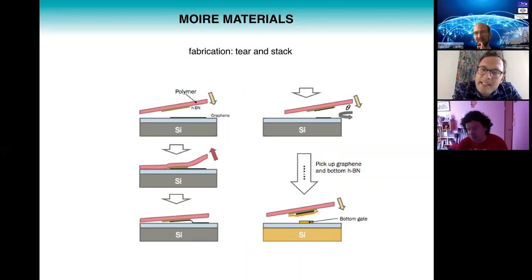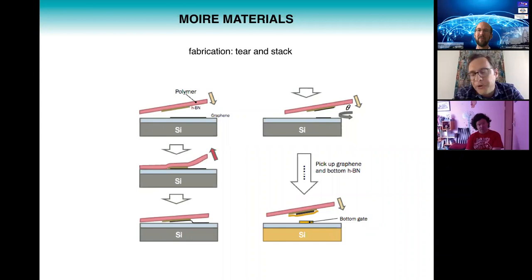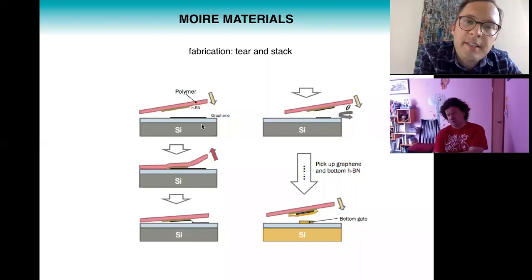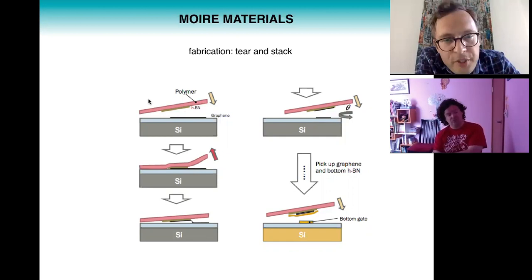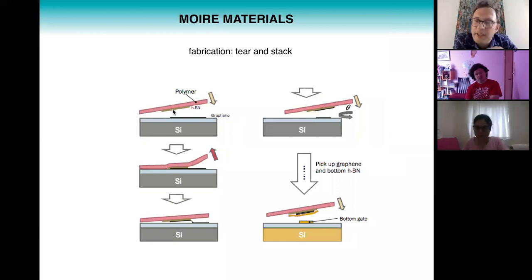Let me tell you a little bit about how experimentalists can make these twisted bilayer materials, because for many years that was the bottleneck. You could get some twisted bilayer materials just by letting these two-dimensional materials fall on top of each other, but the relative twist angle was more or less arbitrary and not very controllable. That changed with the introduction of the so-called tear-and-stack technique. You start with a single monolayer of graphene on a silicon or silicon oxide substrate, then you bring down a polymer stamp with a thin film of hexagonal boron nitride at the front — a preferred substrate for graphene because it is truly atomically flat over large distances.